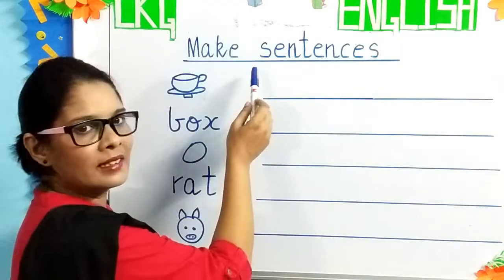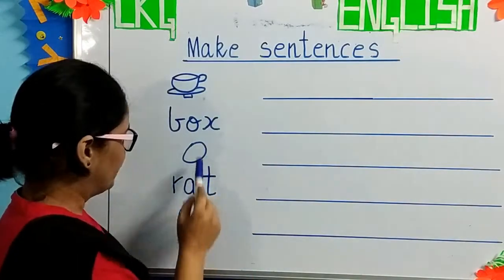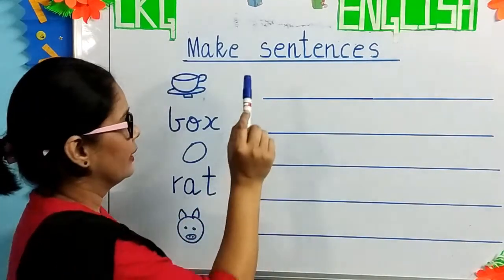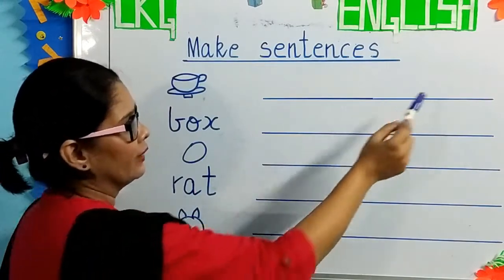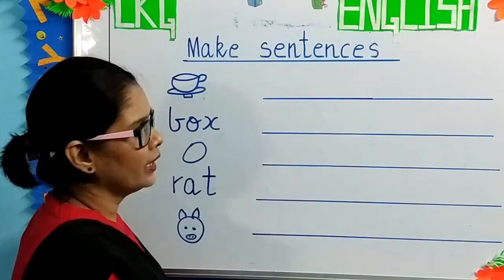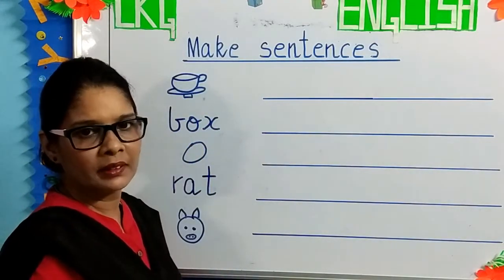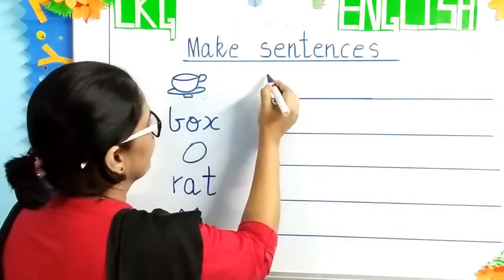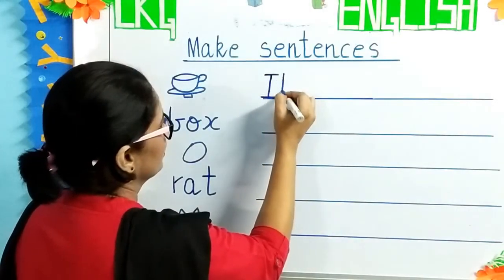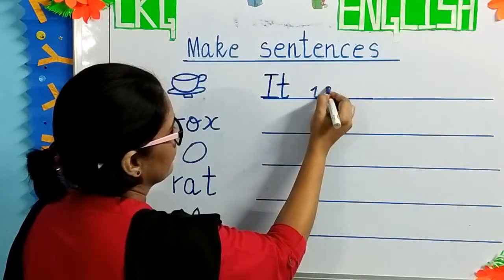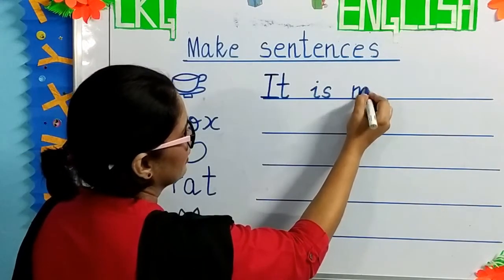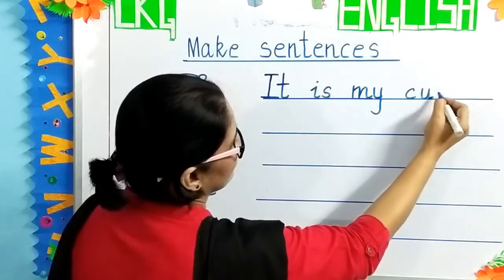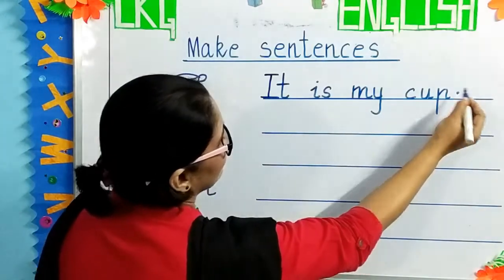Children, repeat with me: C-U-P, cup. J-U-G, jug. S-U-N, sun. H-U-T, hut. T-U-B, tub. B-U-G, bug. The next topic is make sentences. Here we have a few pictures and words and we will make sentences. When we start a sentence, it begins with a capital letter, and when we end the sentence, you will put a full stop. The first picture is a cup. Make a sentence with cup: 'It is my cup.' We will write capital I, small t — it is my, M-Y, my cup. And full stop.